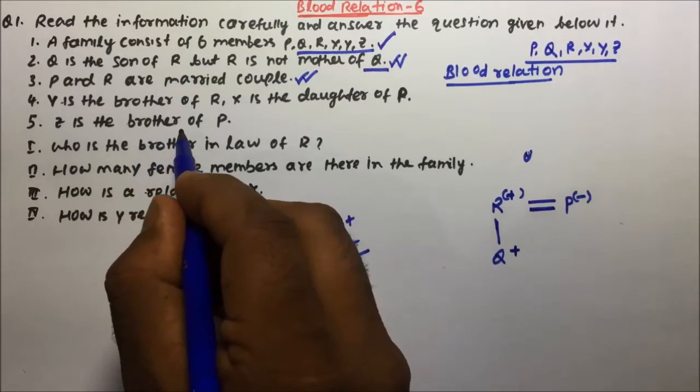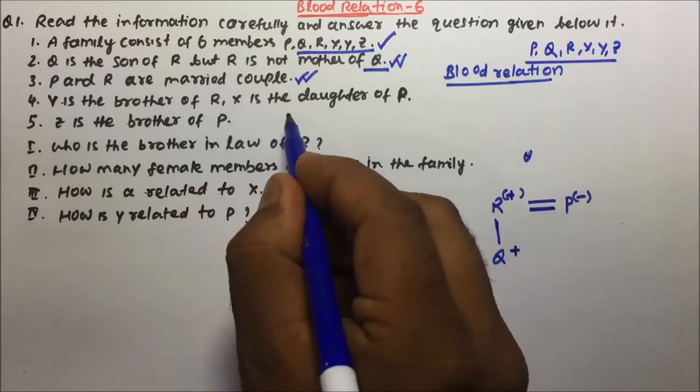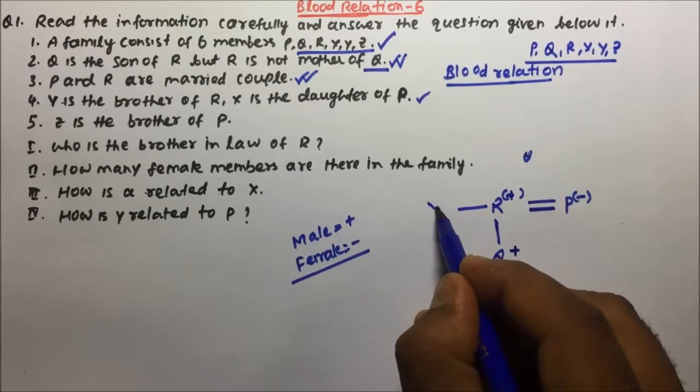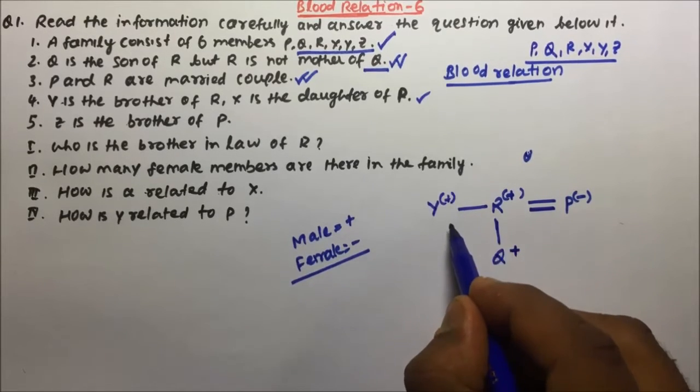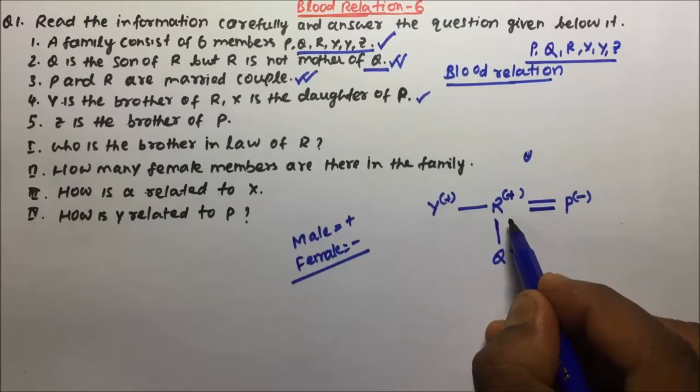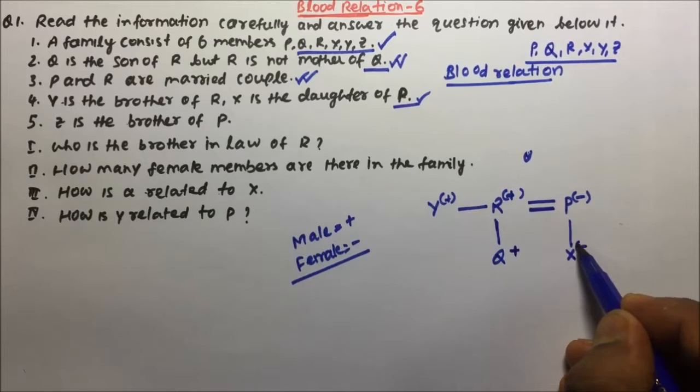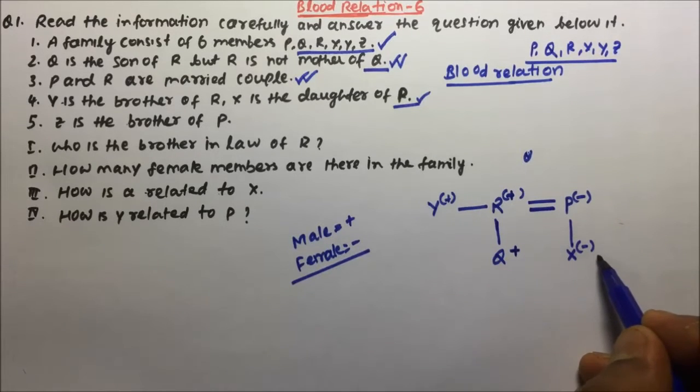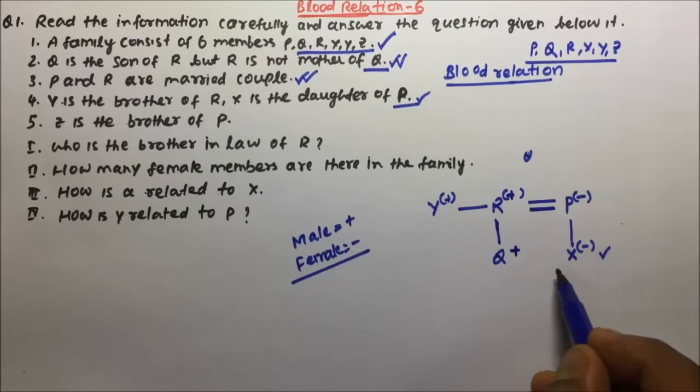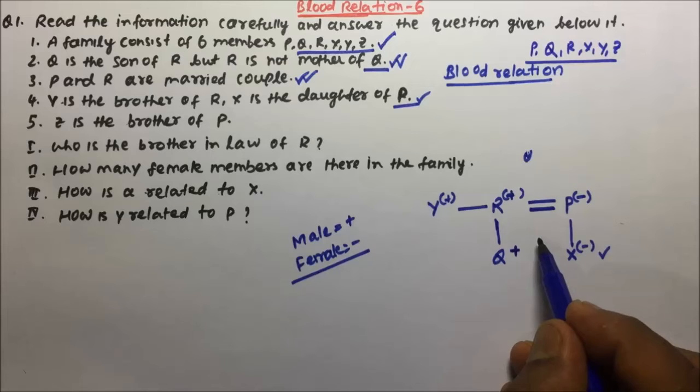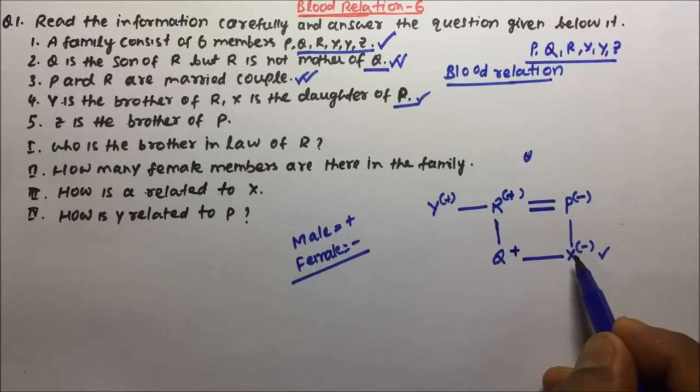Now next line is Y is the brother of R and X is the daughter of P. So Y is the brother of R, and X is daughter of P. X will be daughter of P, and if X is a daughter then X will be female. So from here what we can say: for Q and X the parents are P and R, that means Q and X will become brother and sister.